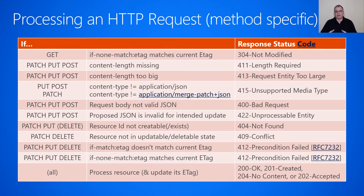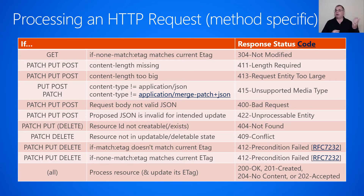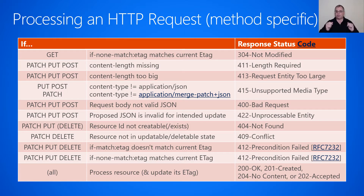On this slide, I continue the conversation of processing an incoming client request on the service, but now we start to throw the specific methods into the picture. For example, if this is a GET request coming in, the first thing you should do is check to see if there's an If-None-Match header with an ETag value. If it exists and it matches the ETag on the current resource, then you return 304 not modified and skip the rest of the table.